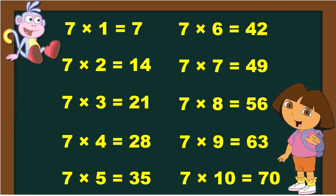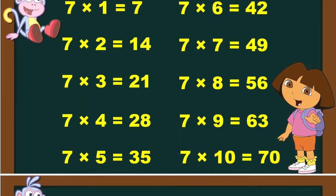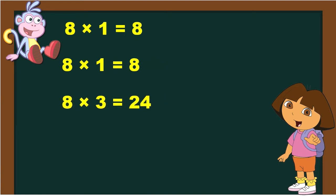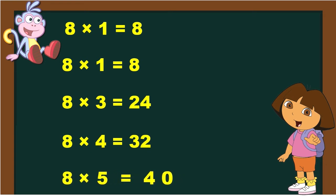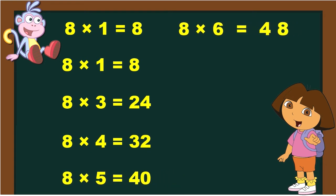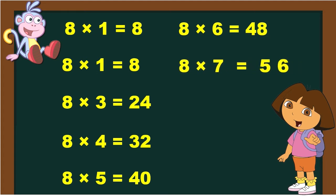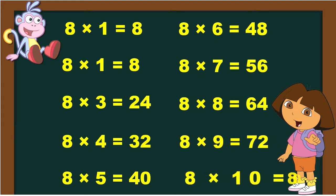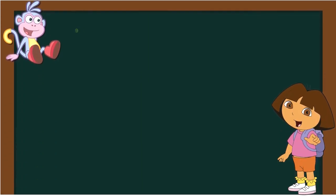8 1s are 8. 8 2s are 16. 8 3s are 24. 8 4s are 32. 8 5s are 40. 8 6s are 48. 8 7s are 56. 8 8s are 64. 8 9s are 72. 8 10s are 80.